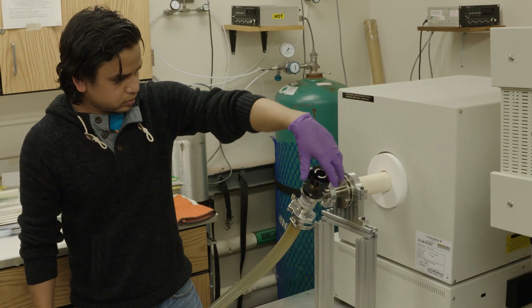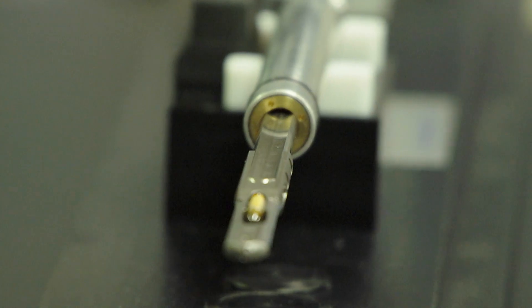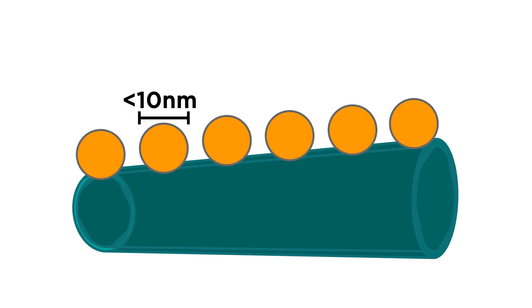We are trying to understand how to make a transistor without using a semiconductor. On a piece of insulating boron nitride nanotubes, we put a single array of gold nanoparticles on the surface, and each particle is less than 10 nanometers in diameter, with gaps in between of 1 to 3 nanometers.